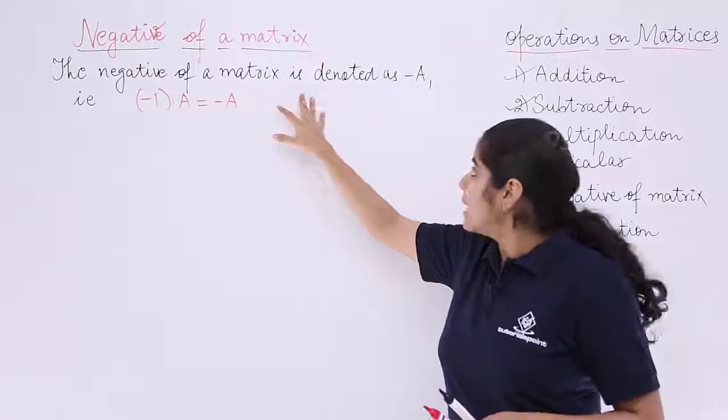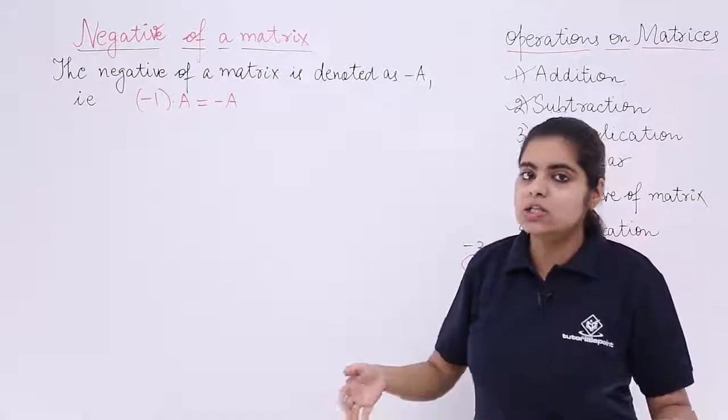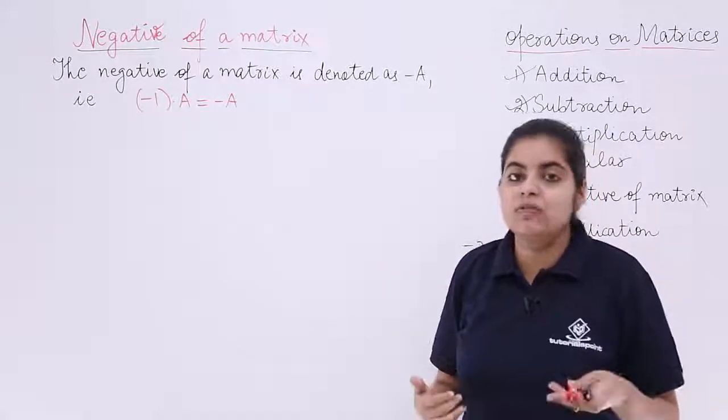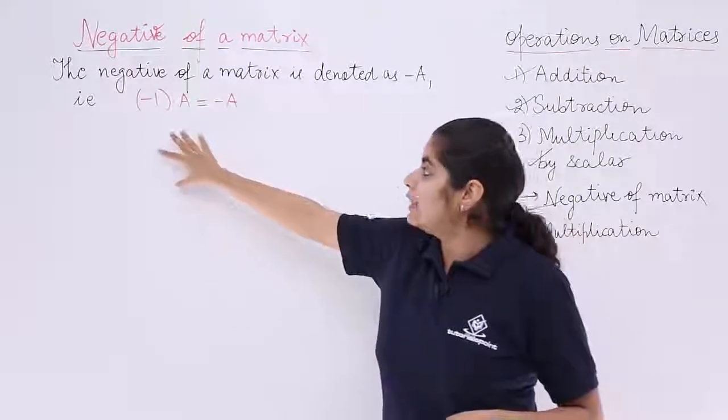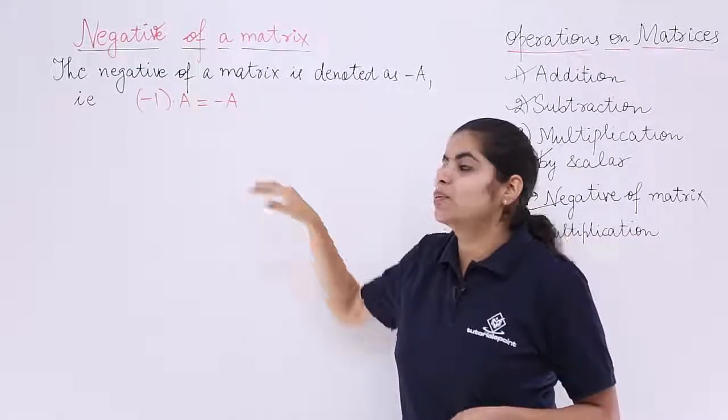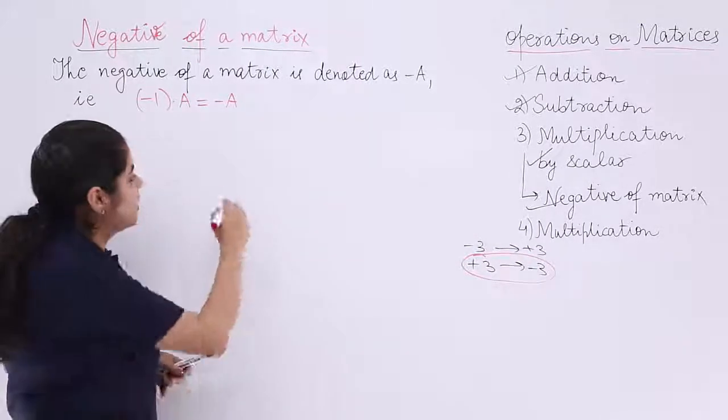The negative of a matrix is denoted as minus A. Suppose a matrix is given to me as A, so its negative will be minus A. If given to me as B, its negative will be minus B. And that is minus 1 into A equals minus A. Now let's see one to two examples and then things will become clear.